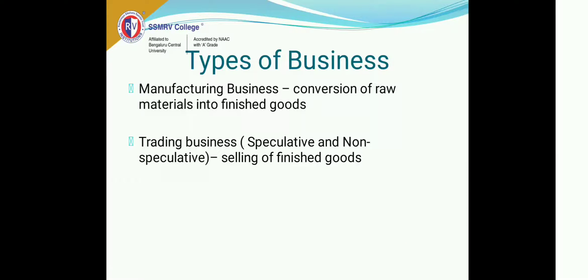Types of business: income tax divides business into two. One is a manufacturing business — that is conversion of raw materials into finished goods. And trading business, which is speculative and not speculative. Basically, trading business is where you don't manufacture anything; you buy from somebody and sell it to somebody else. That process is called a trading business.